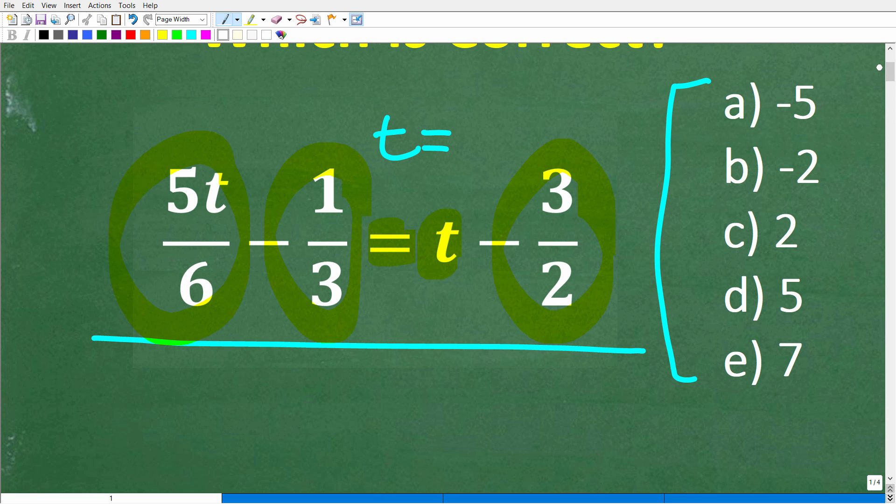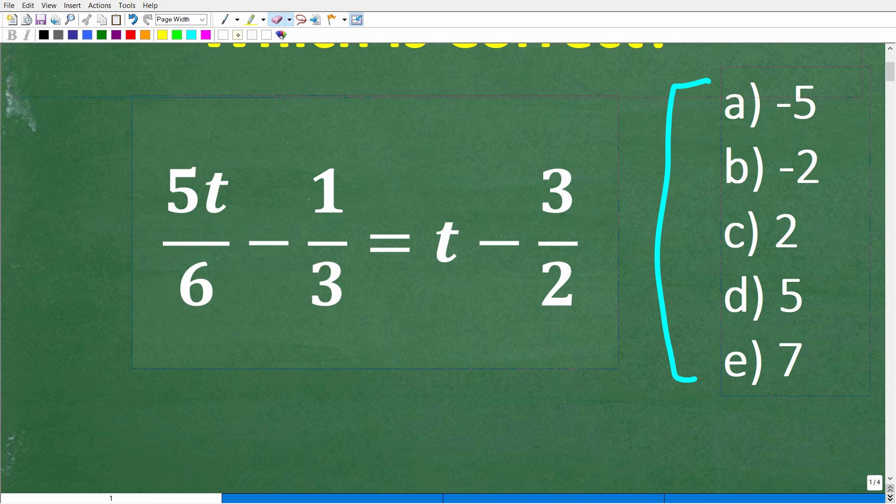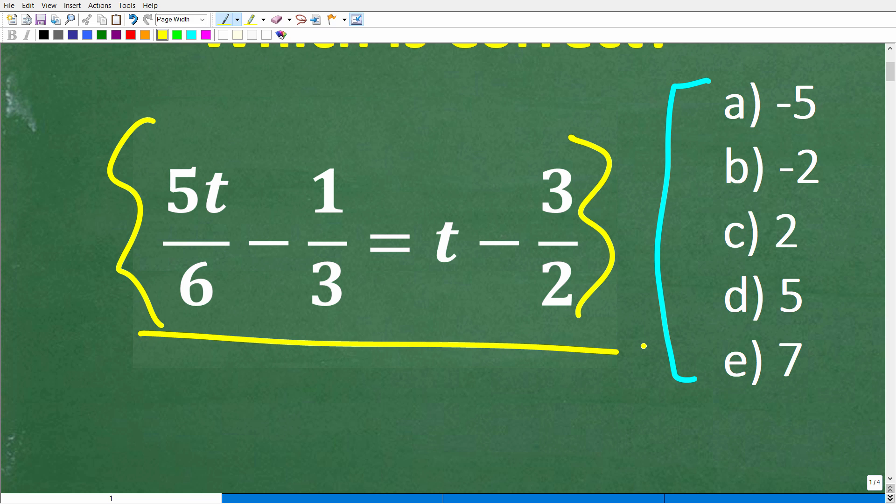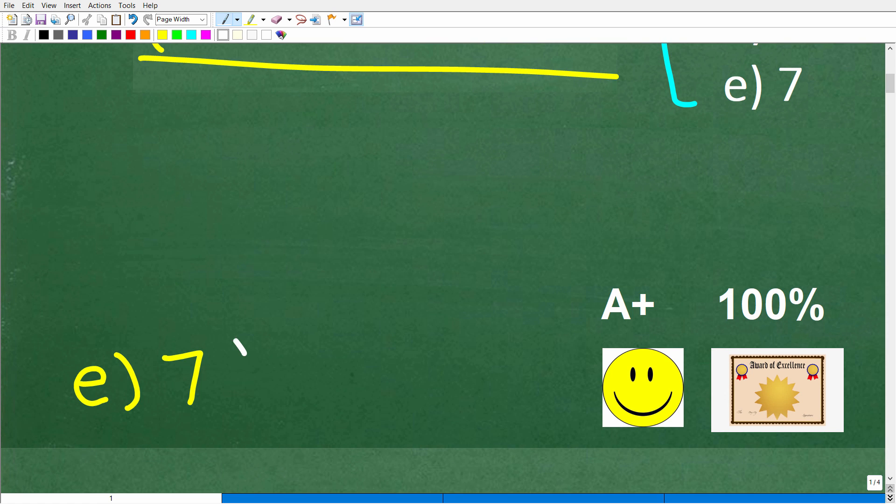Here is our equation. In algebra, anytime you have an equation that involves fractions with a variable, technically we're talking about something called rational equations. For those of you that are still math students or you're taking algebra, you learned it in some sort of chapter or unit called rational equations. Let's take a look at the answer.